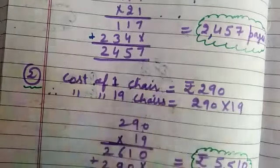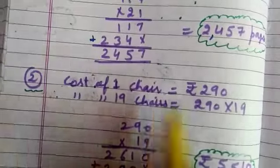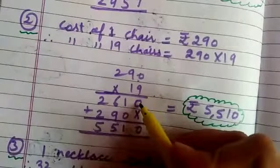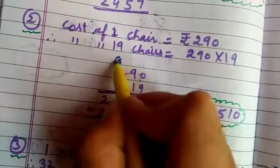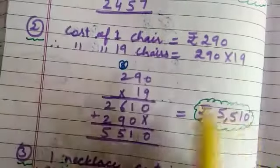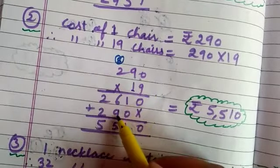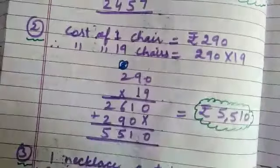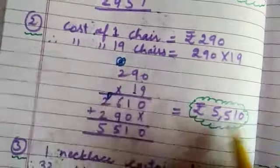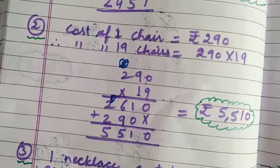Cost of one chair is 290. Therefore, cost of 19 chairs is 290 multiplied by 19. 9×0 is 0, 9×9 is 81, write 1 carry 8; 9×2 is 18, 18 plus 8 is 26. Now 2nd digit — cross. 1×0 is 0, 1×9 is 9, 1×2 is 2. Adding: 0, 9 plus 6 is 15 carry 1, 2 plus 2 is 4, plus 1 is 5. So 5,510.